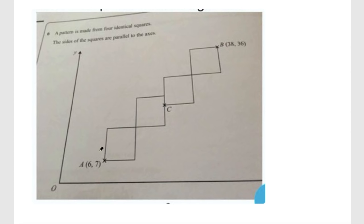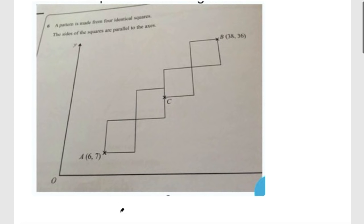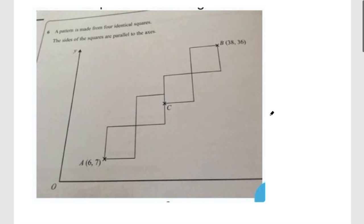Here we have the diagram with the bottom square down here with this corner at (6,7) and the top corner here is at (38,36). I'm guessing the rest of the question was to find the coordinates for C.